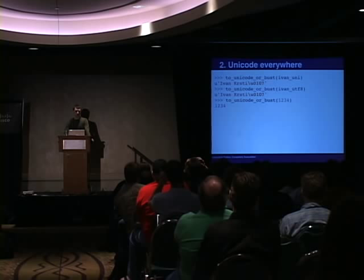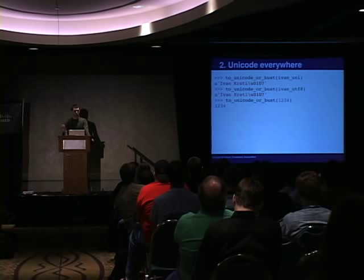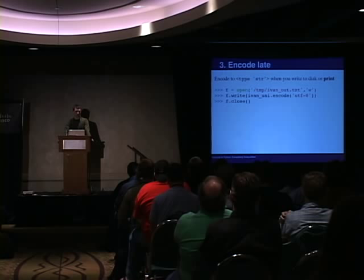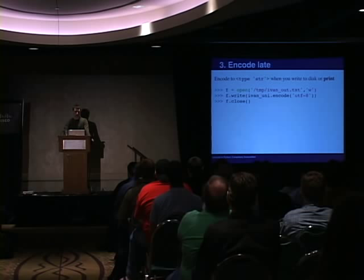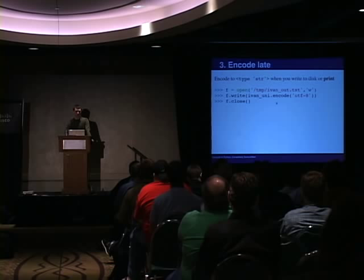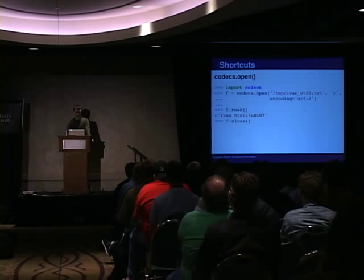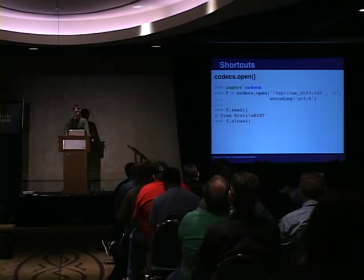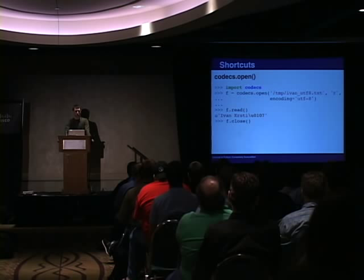And by encoding late, I just mean to encode into the str type whenever you write to disk or print. To do that, you open a file and write the unicode object with a special encode argument, which returns a str type. There's a good shortcut in the codecs module, which is part of the standard library. If you open a file with codecs.open, you get a new keyword argument for encoding. If you read that in, the codecs module has already turned the content into a unicode object for you. And it works the same way for writing — you can write unicode and the codecs module handles the UTF-8 encoding.